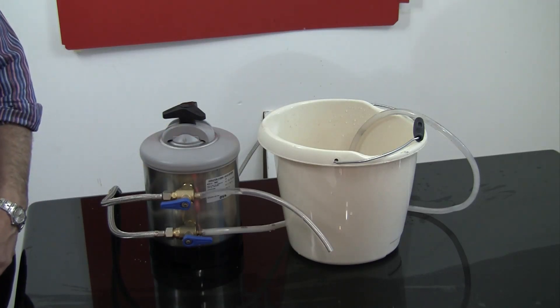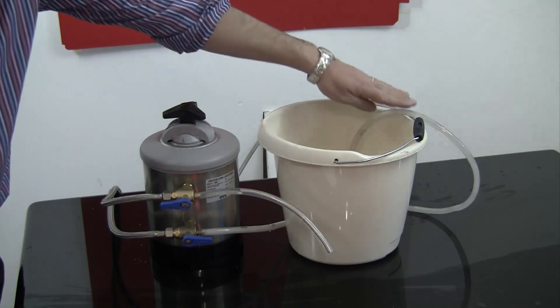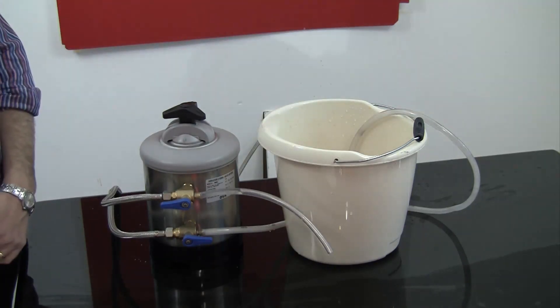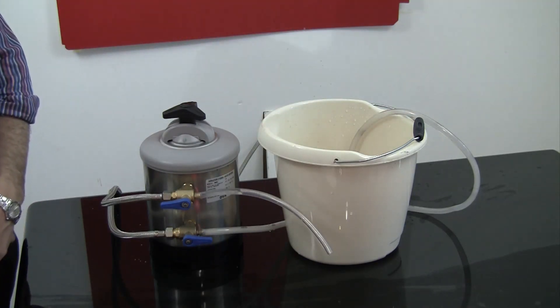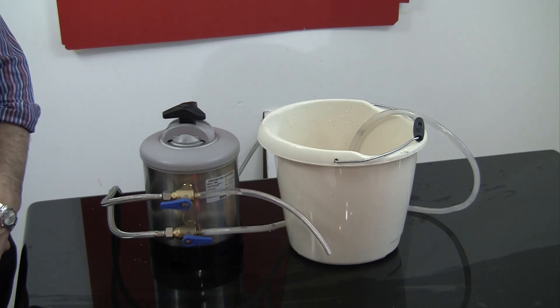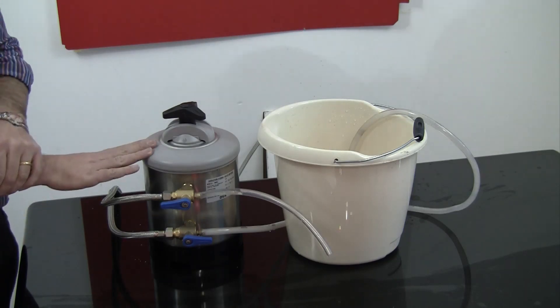The water will start to come out of the clear rubber tube into the waste water container. Allow the water to flow through for 45 minutes for this particular size of unit.